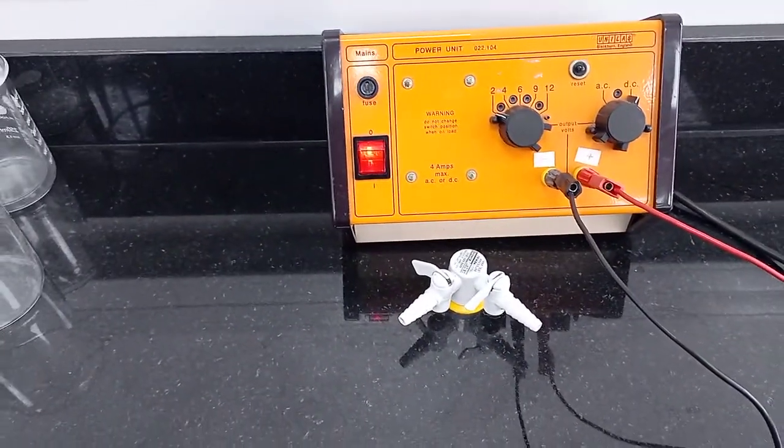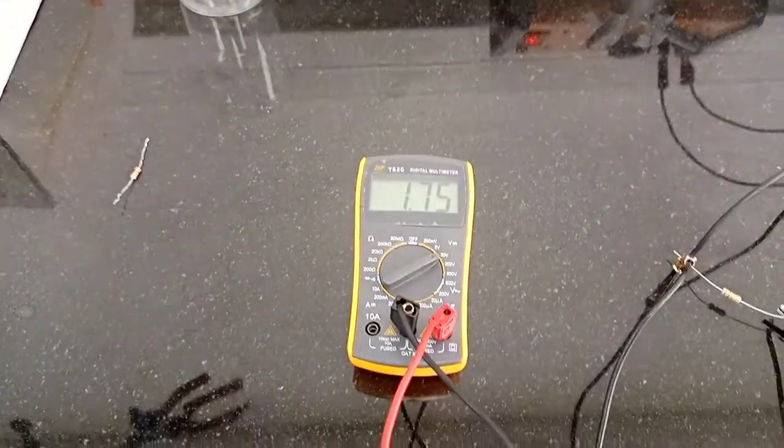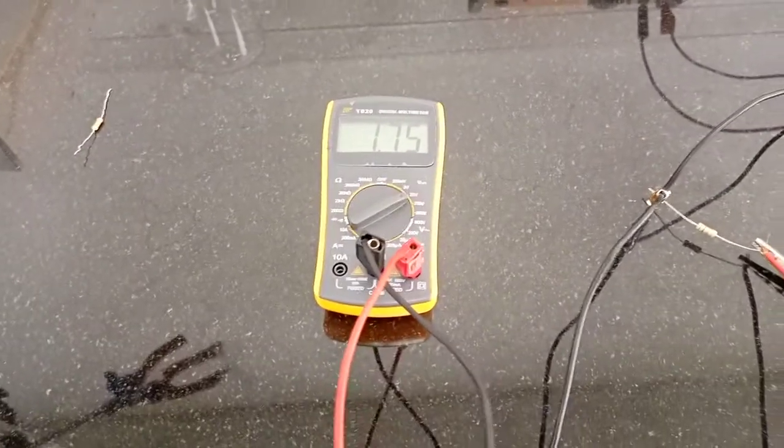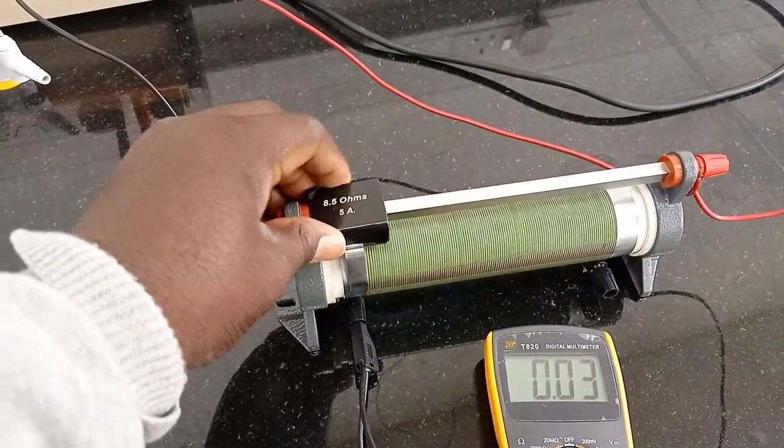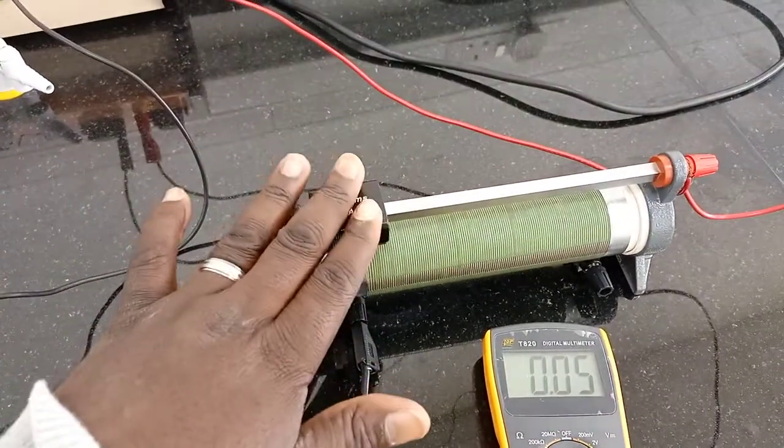Right, so we have set at 2 volts. We have 1.75 volts there when the resistance on the rheostat is zero, which means there's no resistance.